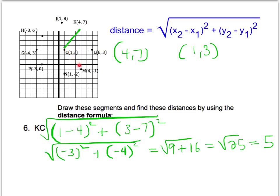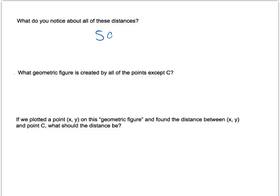And in fact, if you found the distance between point C in any of these points, we won't make you do that with the distance formula. But if we did do that, you would find the distance between any point on that circle and point C will be the same distance. And the next question here, what geometric figure is created by all of the points except for C? We talked about that in the beginning. We can visually see that, yes, that is a circle. And we just proved that that distance from the point C to any point on that circle is the same. So if we plotted a point, any point on this geometric figure, and found the distance between that point and point C, the distance would be 5, which actually represents the radius of our circle.